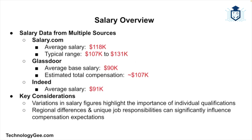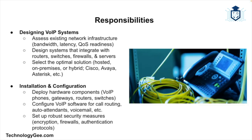The average annual salary for a VoIP engineer in the U.S. varies based on factors such as experience, location, and specific job responsibilities. According to Salary.com, the average salary is $118,000, with a typical range between $107,000 and $131,000. Glassdoor reports an average base salary of $90,000 with an estimated total compensation around $107,000 per year, and Indeed lists the average salary at about $91,000. These variations underscore the importance of considering individual qualifications and regional factors when evaluating salary expectations.